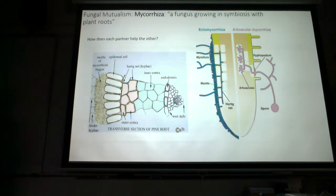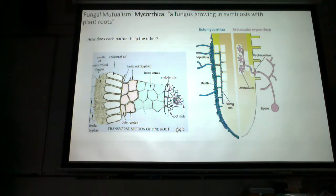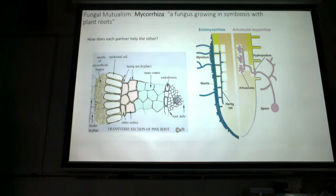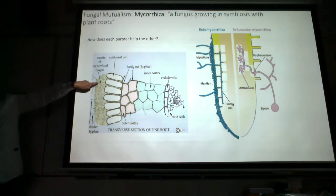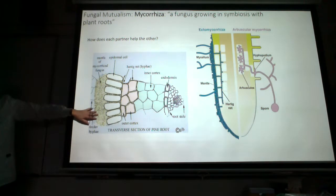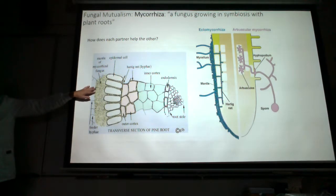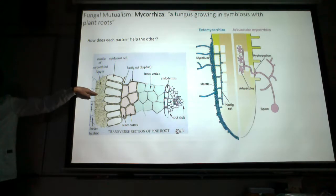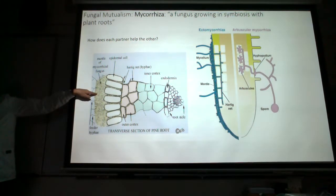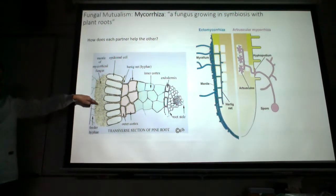In contrast, endomycorrhizae can penetrate through the plant cell wall and live between the plant cell membrane and the plant cell wall. I put ectomycorrhizae on the lab exam because it's easiest to point to the fungal network of hyphae outside the plant root. If I put the pointer on those filaments, you should identify the organism as fungi and the structures as hyphae.